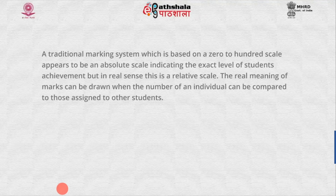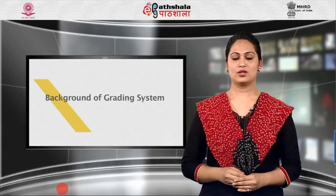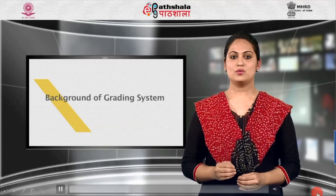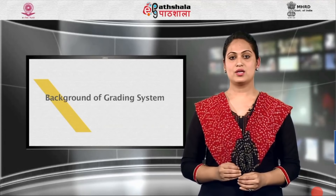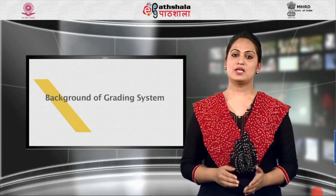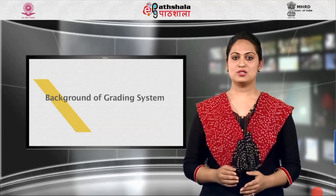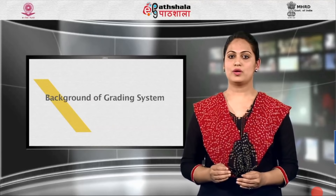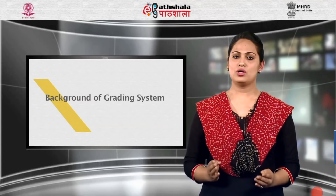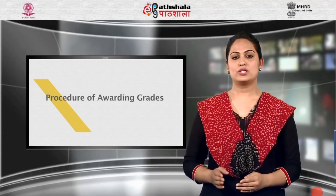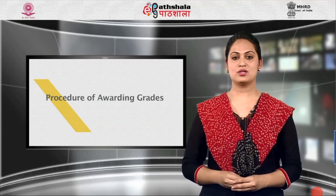A traditional marking system based on a 0 to 100 scale appears to be an absolute scale indicating the exact level of student achievement. But in reality, this is a relative scale — the real meaning of marks can be drawn when an individual's number is compared to those assigned to other students. There are certain standard errors of measurement like human weakness and subjective evaluation. Research reveals that the same examiner gives different marks to the same individual on the same paper when examined twice. There are also variations in marks across different subjects, and the standard and pattern of question papers in the same subject vary from time to time. Considering all these points, there is a need for conversion of marks into grades.